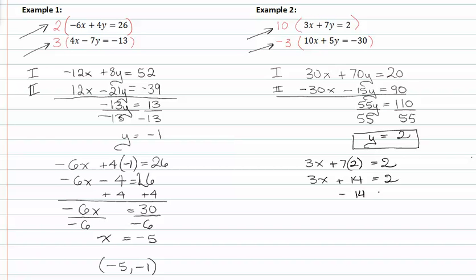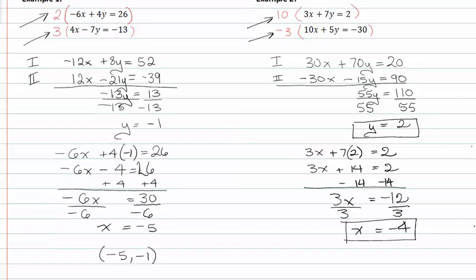Subtracting fourteen from both sides gives me 3x = -12. Dividing by three on both sides gives me x = -4. Now I have x and y, so I can write my coordinate point or solution to the system as (-4, 2).